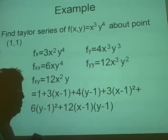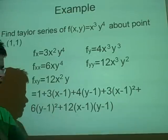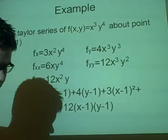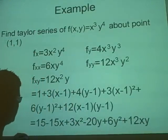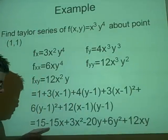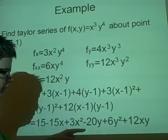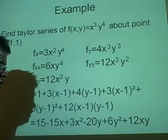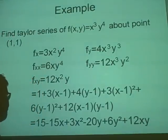And then we have just the normal at the end, 12 times this. And if you expand this, do a bit of a rejiggle to make it look a bit nicer, you'll end up with your final answer of 15 - 15x + 3x² - 20y + 6y² + 12xy. And that's how it's done.